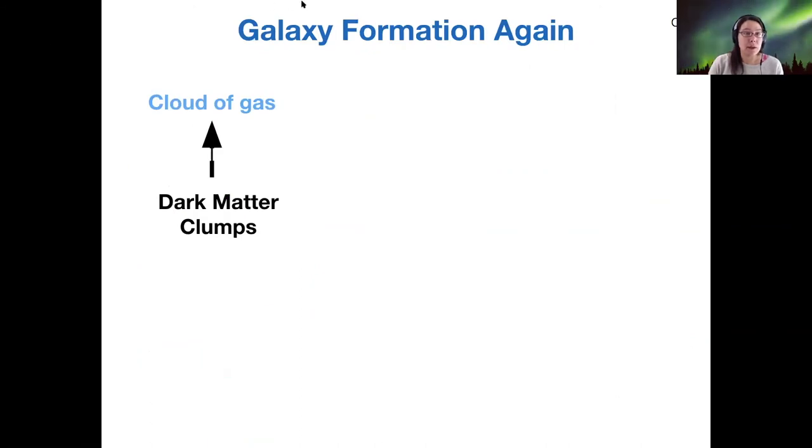Okay, so I want to tie this back to our earlier discussion about galaxy formation from last week. So now we are basically adding to what we already know about how galaxies formed. Our new piece of information is that dark matter clumps was what helped initial clumps of gas to form